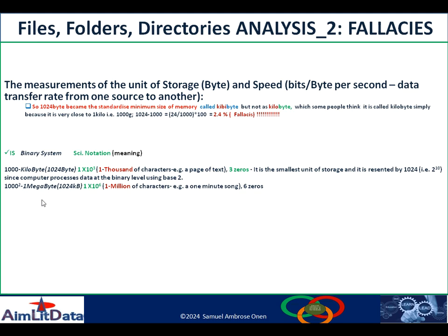Think of one thousand as the base. Each time you want to get the next level of storage, you multiply one thousand by itself, which gives us one thousand squared. That is equivalent to one megabyte, which is equivalent to 1024 kilobytes. The scientific notation is 1 × 10⁶, where six is the number of zeros, meaning one million characters. To get the power of six, you multiply one thousand times one thousand, which gives you six zeros — equivalent to one million characters.